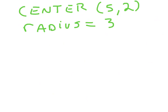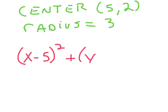Here, someone gave us some information. The center of our circle is at (5, 2) and the radius is 3. So what is the equation? We have parentheses x — and since the center says 5, we write minus 5 — quantity squared, plus. Then y — since the center says positive 2, we write minus 2 — quantity squared. That equals the radius squared. 3 is our radius, so it's 3 squared, which you could also write as 9.